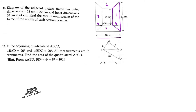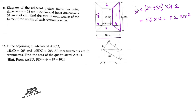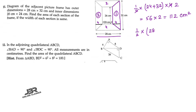For trapeziums 1 and 3, the area = half × (24 + 32) × 4 = half × 56 × 4 = 112 centimeter square each. For trapeziums 2 and 4, the parallel sides are 28 and 20, so area = half × (28 + 20) × 4 = half × 48 × 4 = 96 centimeter square each.